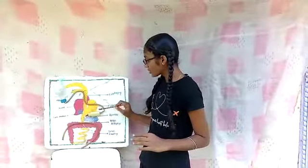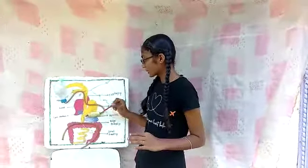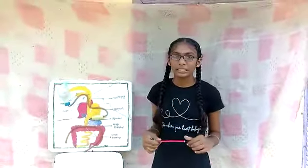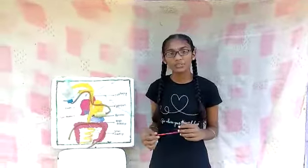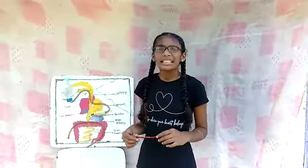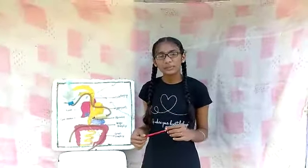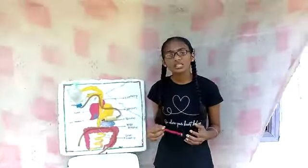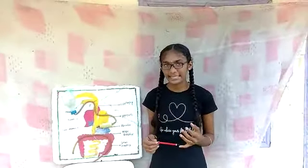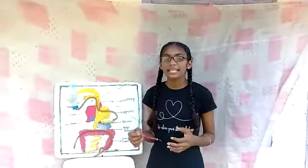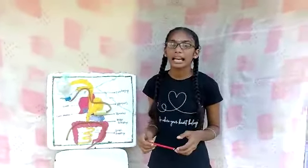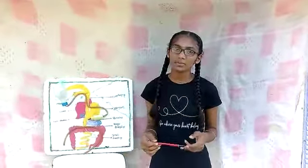The food will then enter the stomach. In the stomach, there are digestive juices and gastric glands. There are three types of gastric glands: the first is HCl, the second is pepsin, and the third is mucus.